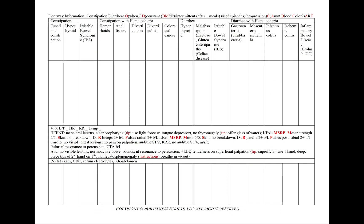To assess constipation or diarrhea using our mnemonic OLD CARDS as our guide, we note the onset, or when did it start. For duration, we want to know if we're having the constipation or diarrhea constantly with every bowel movement — if so, note how many bowel movements per day — or is this more intermittent, for example after a meal, noting how many episodes we've had. For progression, note if bowel movements are occurring less or more frequently.